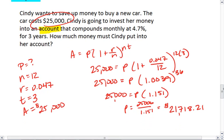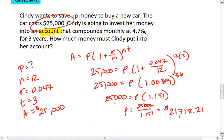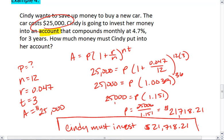Thus, Cindy must invest $21,718.21 if she wants to have $25,000 after 3 years.